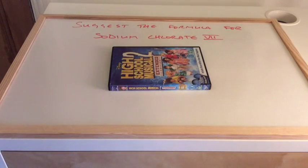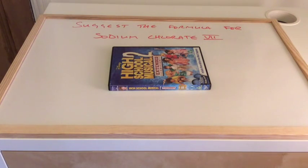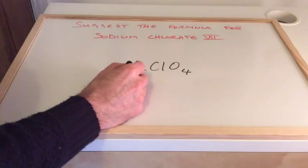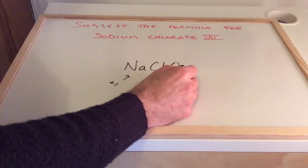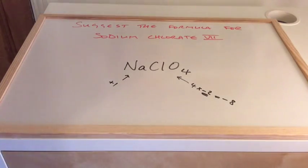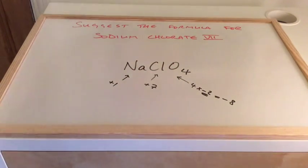We'll finish with this one: suggest the formula for sodium chlorate(VII). So we need the chlorine in the plus 7 oxidation state, and we must also have sodium and some oxygen. The answer is NaClO₄. Let's check: sodium is plus 1, 4 oxygens is 4 times minus 2 each, equals minus 8. So we've got plus 1 minus 8, which means chlorine must be plus 7, and we use the Roman numeral VII.